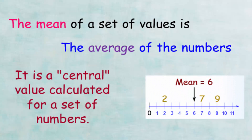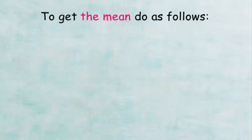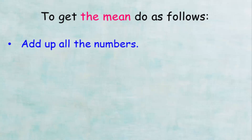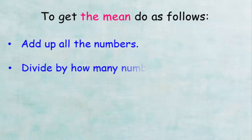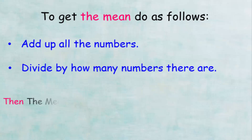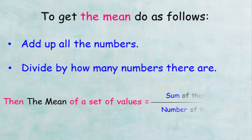To get the arithmetic mean, do the following: first, collect all the numbers that you have; second, divide the sum of these numbers by their count. So the mean of a set of values equals the sum of these values divided by the number of these values.